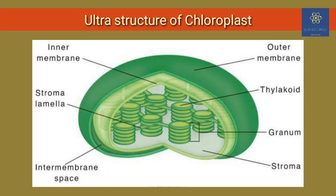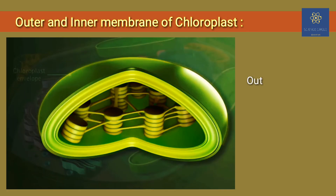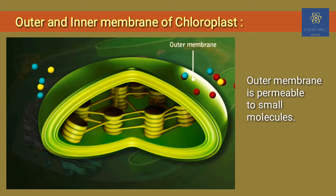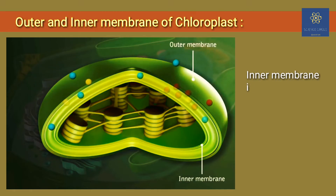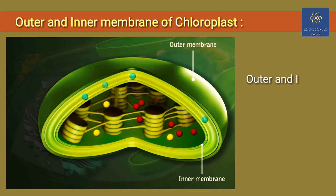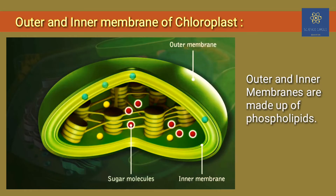Chloroplast is a double membrane structure and it includes an inner membrane, outer membrane, intermembrane space, stroma, and thylakoid membrane. The outer membrane permits the movement of ions and metabolites, whereas the inner membrane is highly specialized with the transport of proteins. Both of these membranes are phospholipid layers measuring 6 to 8 nanometers in thickness. The two membranes are separated by a gap known as intermembrane space.